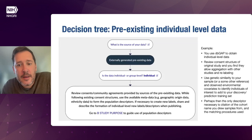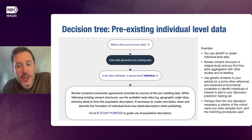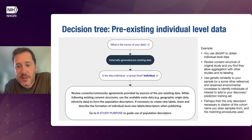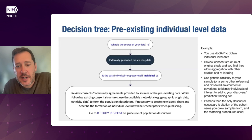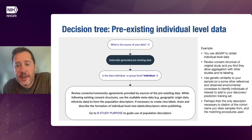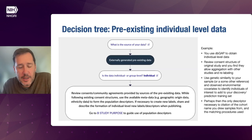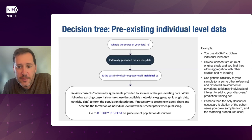As an example, suppose you use dbGaP to obtain individual-level data from a preexisting cohort. You review the consent structure and find that it allows aggregation with other studies and relabeling of the group labels. You can then choose to use genetic similarity to your sample or some other reference and observed environmental covariance to identify individuals of interest to add to your discovery or prediction training set. In this case, perhaps the only descriptor you'll need is to cite the cohort and describe how you used genetic similarity to subselect individuals — for instance, clustering individuals in PCA space and choosing those closest to the centroid of the merged set of cohorts.